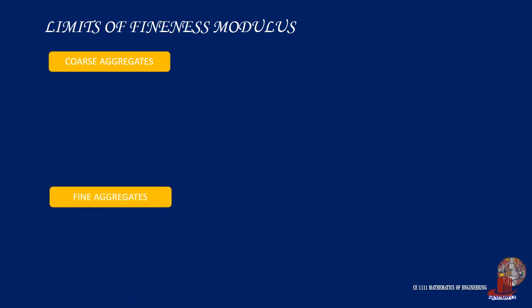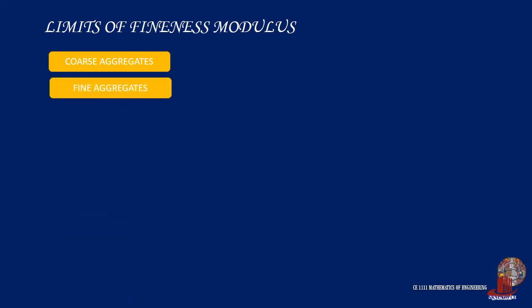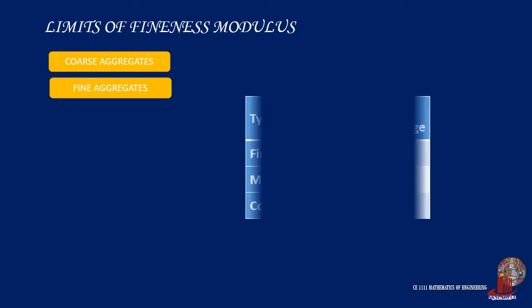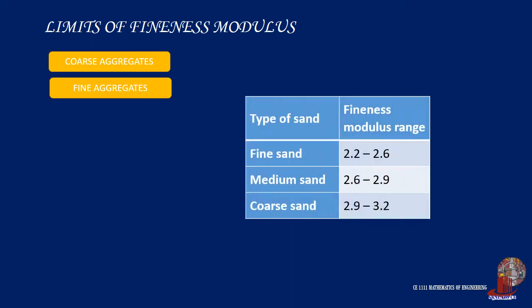Fine aggregate affects many concrete properties including workability and finishability. Usually, a lower fineness modulus results in more paste, making concrete easier to finish. For high cement contents used in the production of high-strength concrete, coarse sand with a fineness modulus around 3.0 produces concrete with the best workability and highest compressive strength. Fineness modulus of fine aggregate varies from 2.0 to 3.5, and fine aggregate having a fineness modulus more than 3.2 should not be considered as fine aggregate.